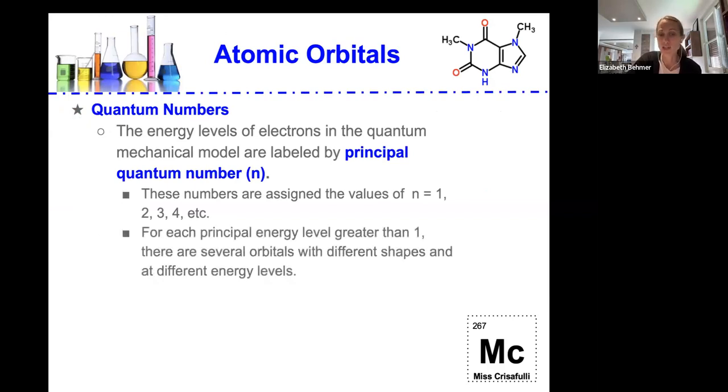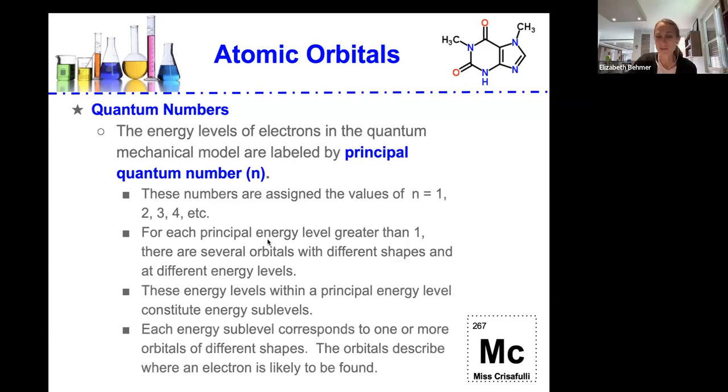And for each principal energy level greater than 1, there are several orbitals with different shapes and at different energy levels. And each energy sub-level corresponds to one or more orbitals of different shapes. And the orbitals describe where an electron is likely to be found.